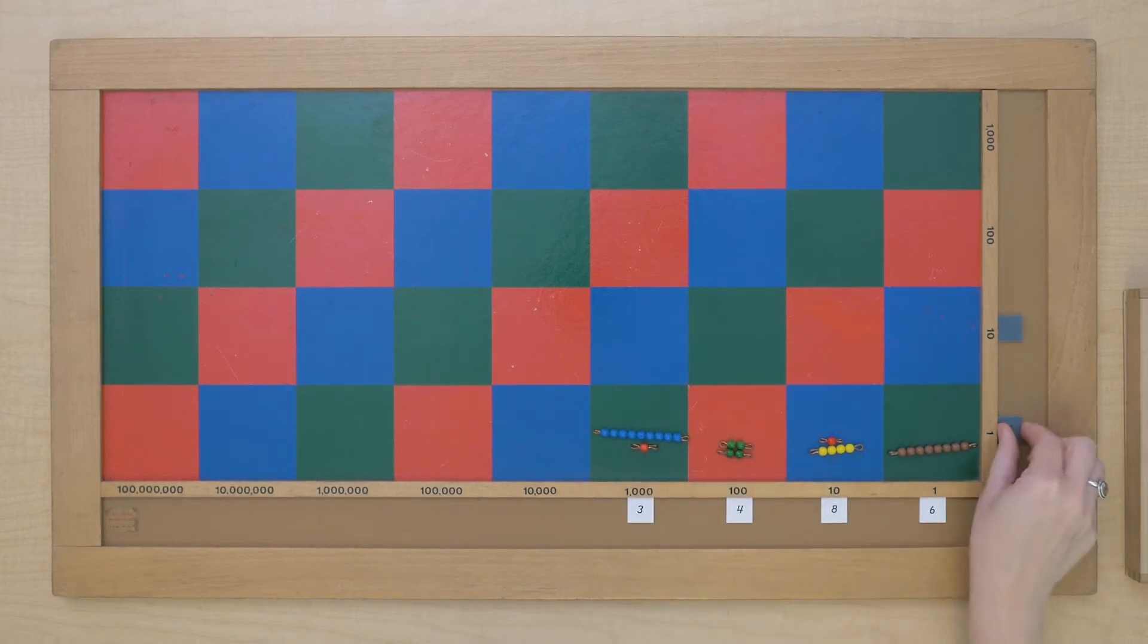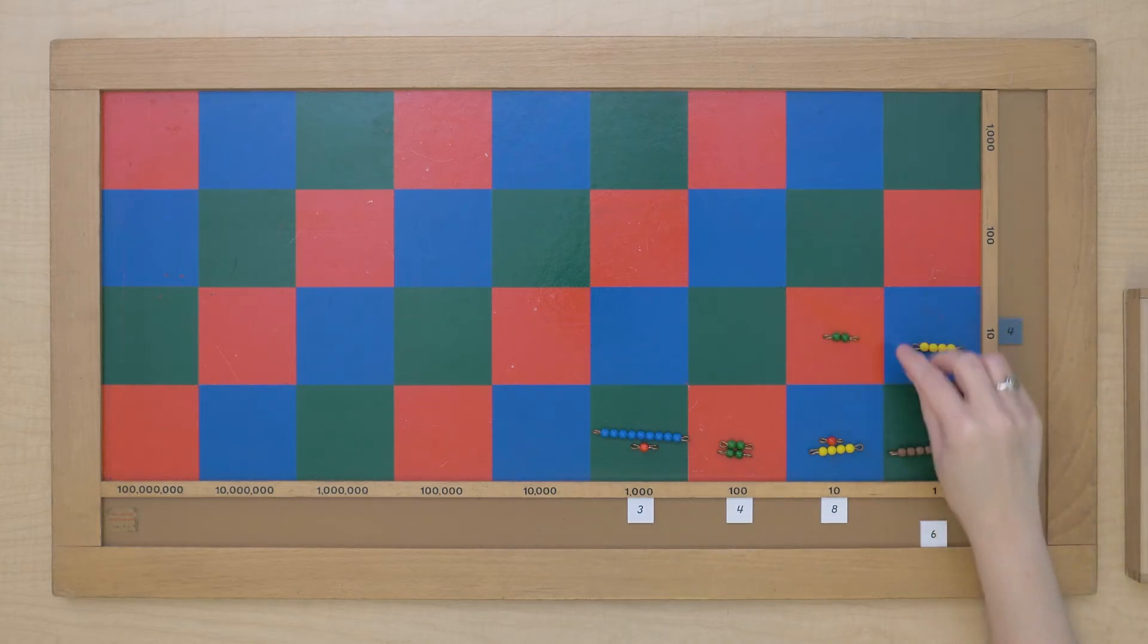Alright, we're finished with our units multiplier. Now we can do our tens multiplier. So we have 6 units times 4 tens. So that's 6 times 4 is 24. So it's 24 tens. So that means 4 tens and 2 hundreds.